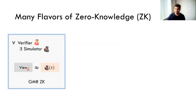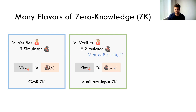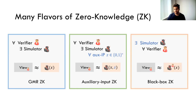There have been many flavors of zero knowledge. The one we've just seen is the GMR zero knowledge definition. Next is auxiliary input zero knowledge: when zero knowledge protocols are used as sub-protocols or composed, the verifier might use information learned from other parts. To account for this, we give the verifier some auxiliary input z, and the simulator must simulate the view given both x and z. The third notion is black box zero knowledge, which asks for a universal simulator that uses the verifier only in a black box manner with oracle access.